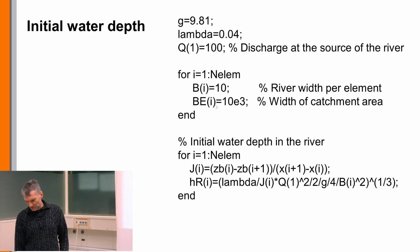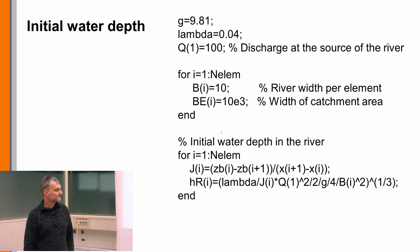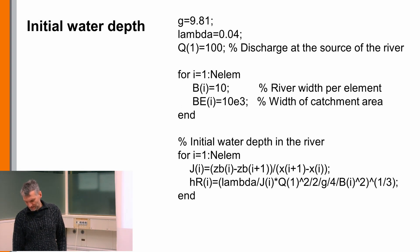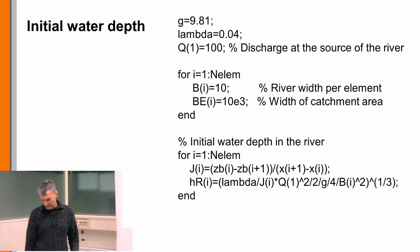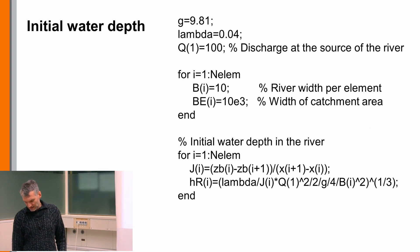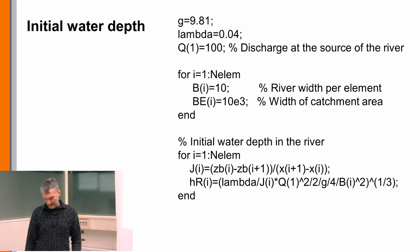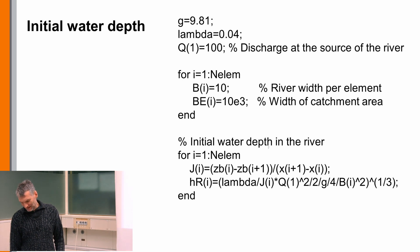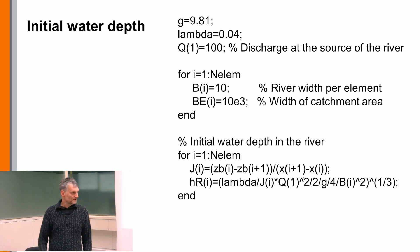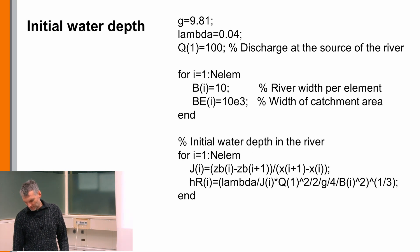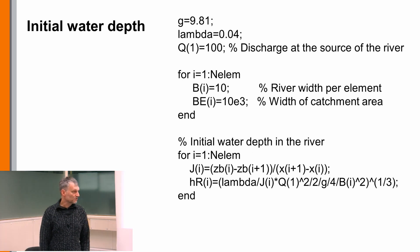In the next lecture when we also have a catchment area belonging to the river we will need additional parameters, but not now. Then we define the initial water depths. To get the initial water depths, we first calculate the slope j, which is the bottom elevation at one edge of the compartment minus the bottom at the next edge, divided by the length of the compartment.